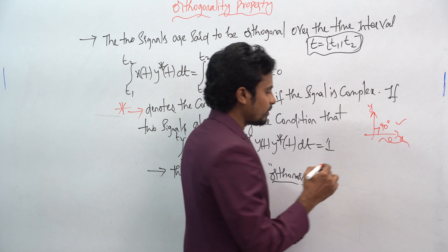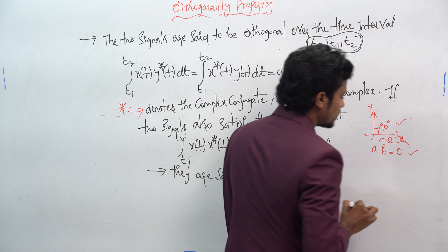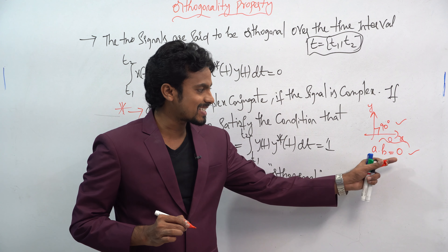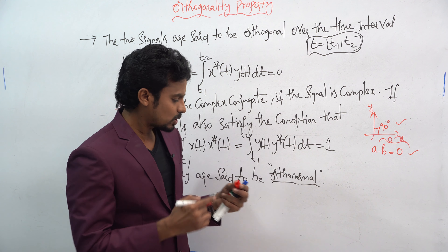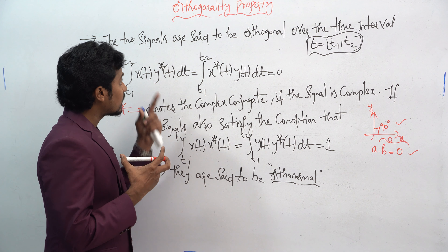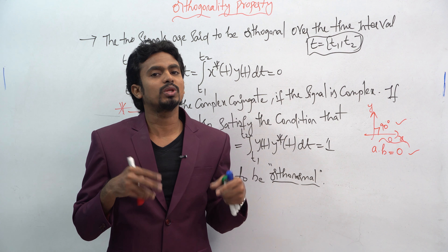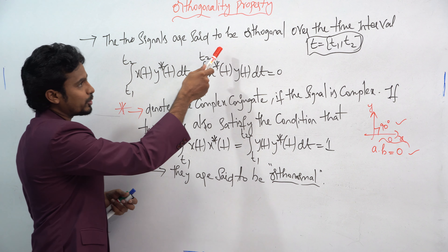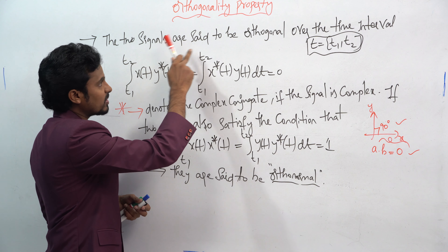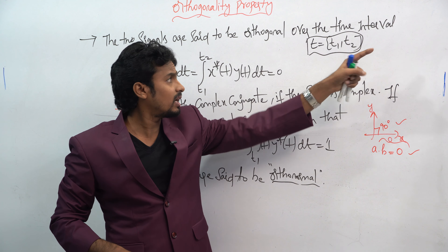Here we see the concept of orthogonality. Orthogonality means — as I already mentioned in the first lecture — in a coordinate system, if you take the x-axis and the y-axis, the angle between them must be 90 degrees. That is said to be an orthogonal signal. So whenever you apply the orthogonality condition, you must get a dot b equal to 0. If you get a dot b equal to 0, then the orthogonality property is satisfied.